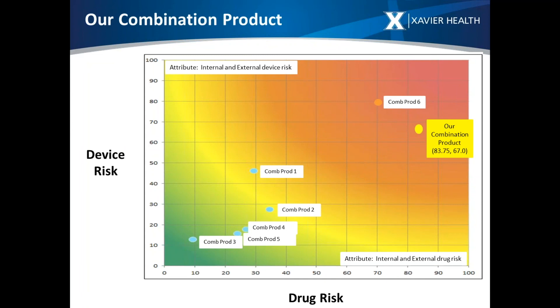Now we can go to that heat map. The device risk score was 67.0% and the drug score was 83.75%. Plotting these — device on the y-axis, drug on the x-axis — the bright yellow dot shows where that combination product maps. Looking at the quadrants, it sits up in the higher risk area. If you have multiple combination products on the same heat map, you can see how they compare to each other, since normalization and weighting make this an apples-to-apples comparison.